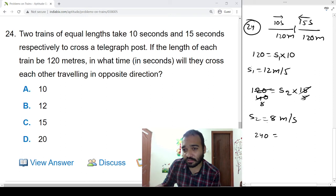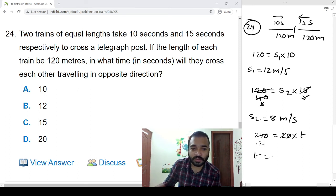So distance is 120 plus 120, 240 meters. Speed, both are in opposite direction, so 12 plus 8, 20 meter per second into time. So 12, t is equal to 12 seconds.